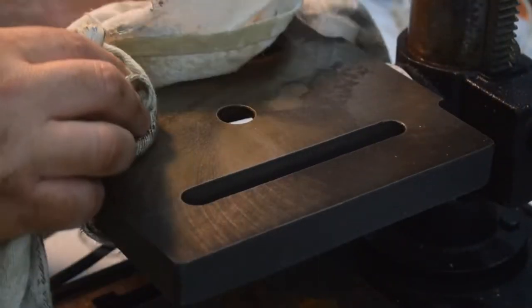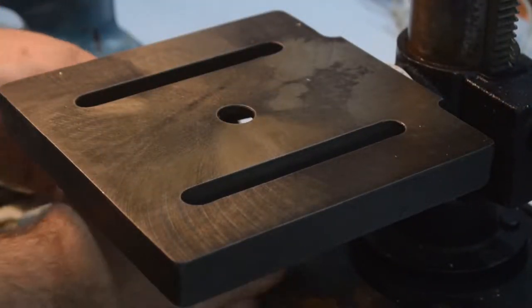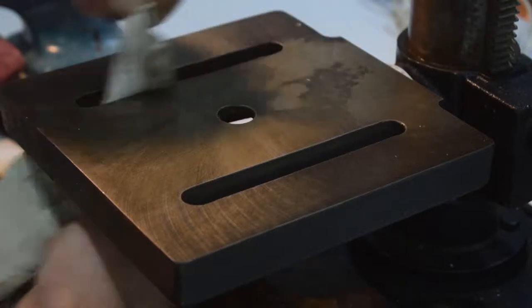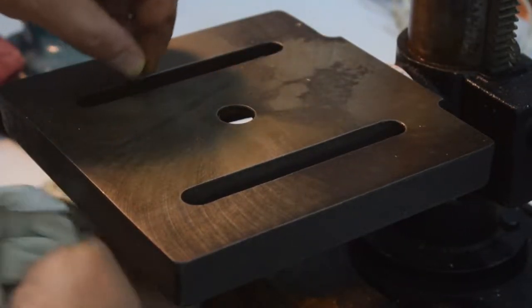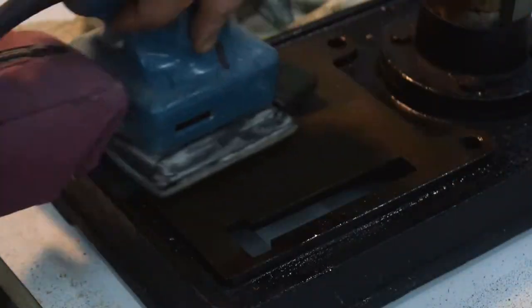There are still some stains, some dark splotches on there, but to get those out you have to get deeper into the cast iron and that's textured. So I didn't really want to get down into it and change the texture of that surface.